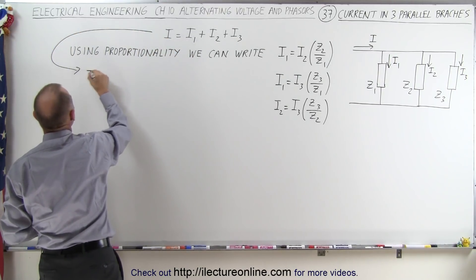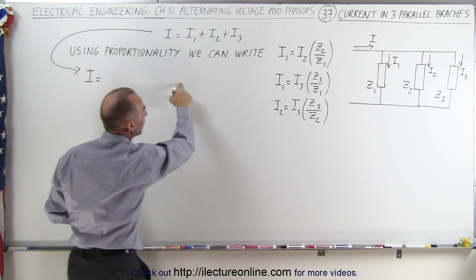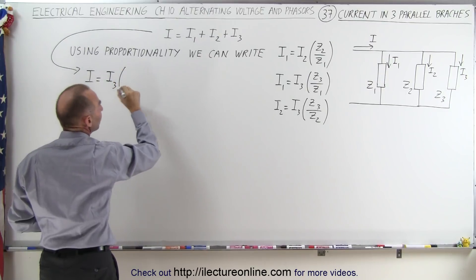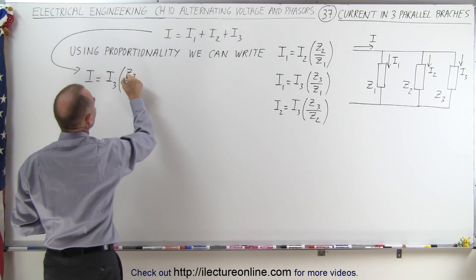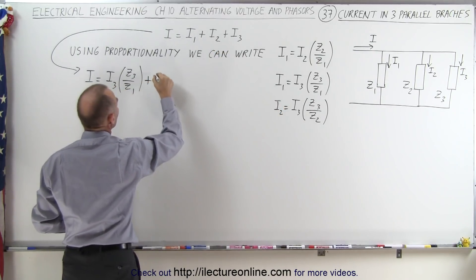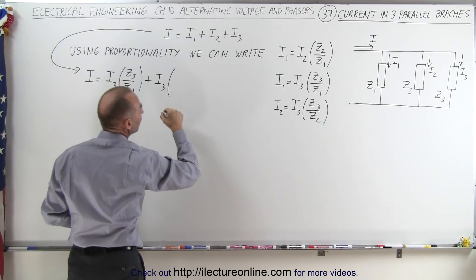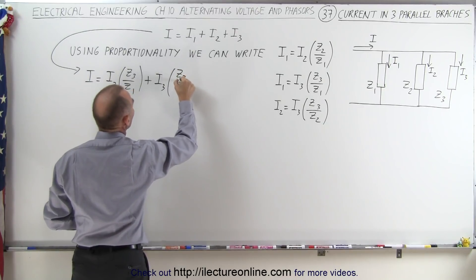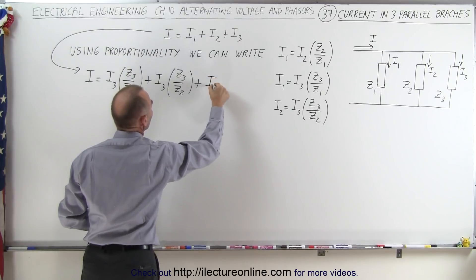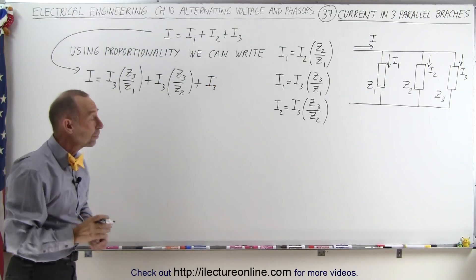So let's go ahead and do that. I can say that I, the total current, is equal to I1, but I'm going to write I1 in terms of I3. So that becomes I3 times the ratio of Z3 divided by Z1, plus, instead of I2, I'm going to write I3 times Z3 divided by Z2, and plus I3, I can leave that one alone. That'll just give me I3.